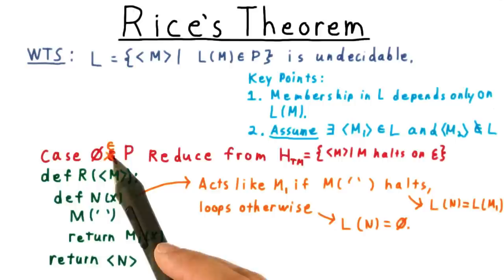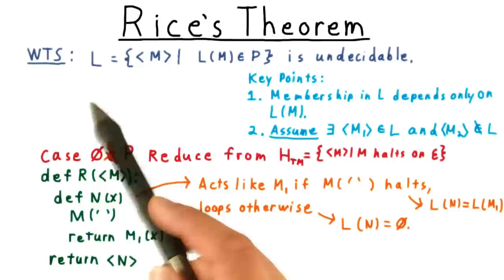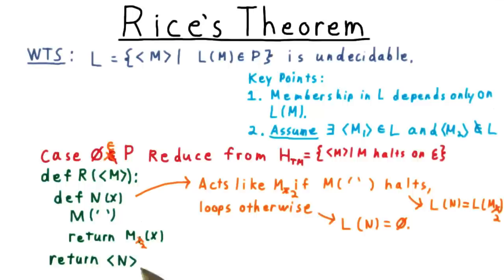Now for the other case, where the empty set is in P. Thus, every machine that doesn't accept any string should be in the language. In this case, we just replace M1 by M2 in the definition of the reduction, so that N behaves like M2 if M halts on the empty string. This is fine...